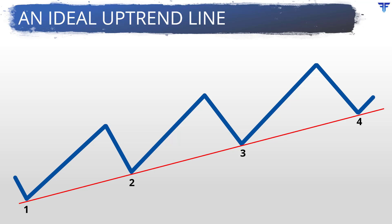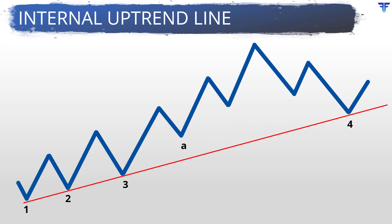Let us understand this using a hypothetical example. Notice that once the red-colored trendline was drawn by connecting points 1 and 2 and validated by the retest at point 3, the rally from point 3 got very steep. Subsequently, it took a great amount of time and distance for the price to approach the red trendline at point 4. To account for this steepness in price rise within the main uptrend, one may need to draw one or more internal trendlines. Notice that from point 3, a black-colored trendline is drawn connecting the low at point A and extended into the future. Later, the price broke below this internal trendline, which alerts the chart observer that the price may now move lower and test the red-colored trendline.